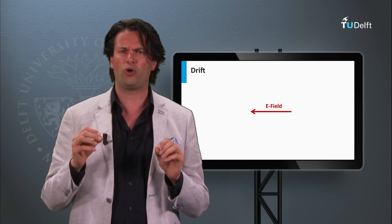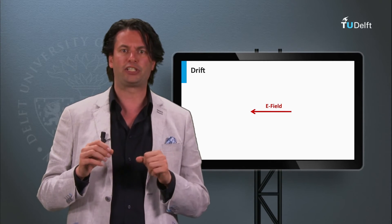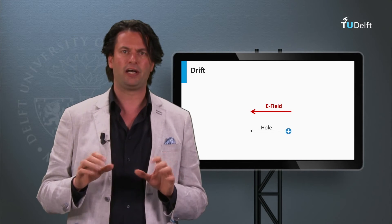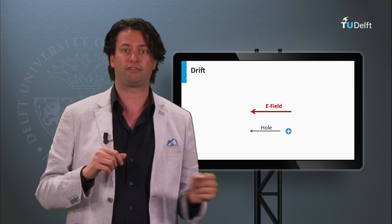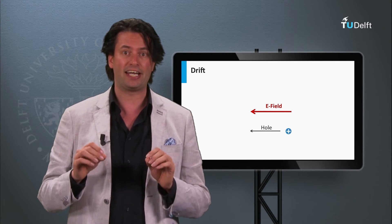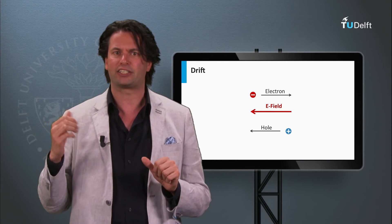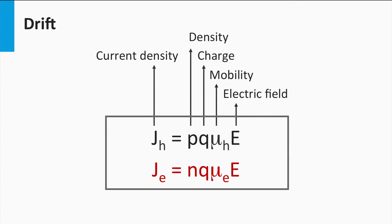Now we move to the second transport mechanism, which is called drift. Charged particles like electrons and holes can also be moved under the influence of an electric field. Let's consider an electric field which points to the left. If a positively charged hole is positioned in this electric field, it will experience an electric force in the direction of the electric field — in this case, to the left — and it will start moving in that direction. A negatively charged electron will experience a force in the opposite direction of the electric field and will start moving to the right. The current density induced by an electric field is given by the product of the density of holes P, the electron charge Q, the mobility constant μ, and the electric field E.